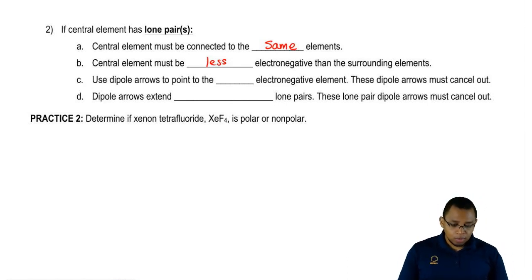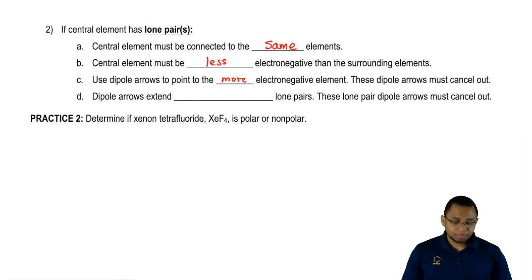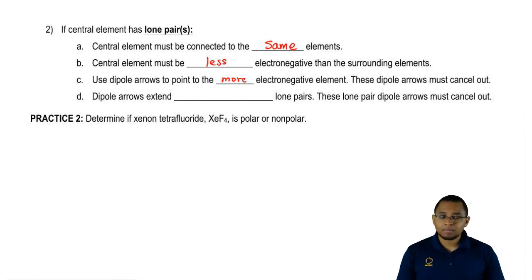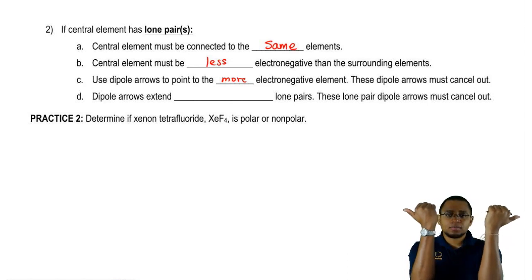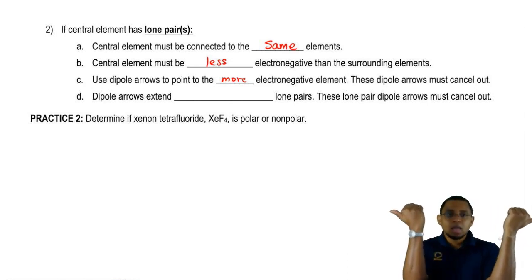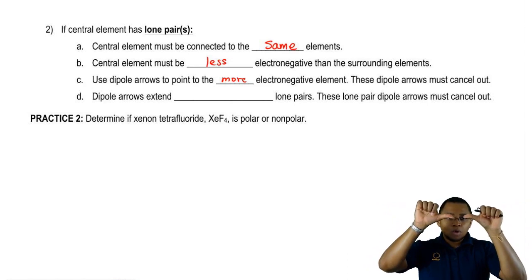Here's the new part. We're going to say use dipole arrows to point to the more electronegative element. These dipole arrows must cancel out. We talked about dipole arrows a few videos back — for them to cancel out, they have to go in opposite directions. If they go inward, they don't cancel out; they actually make the molecule more polar, make the bonds more polar.